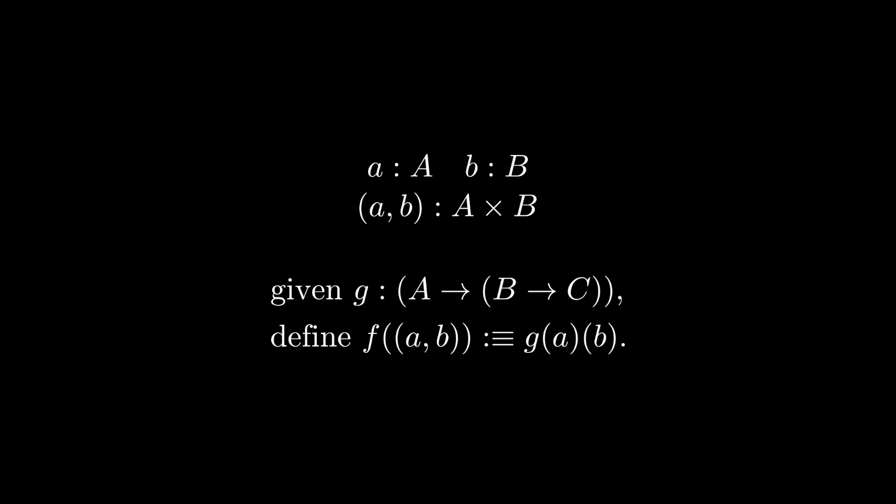We just said something, though, again, that has a subtle implication. We implied that to define F from A cross B to C, it suffices to define values on the pairs little a comma little b. To be clear, this is an actual constraint we are imposing in our definition.